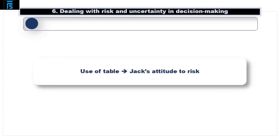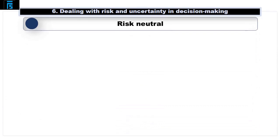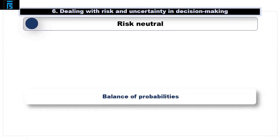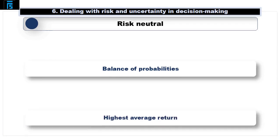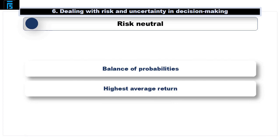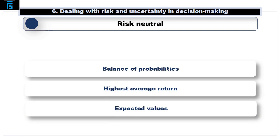How Jack uses this table will depend on his attitude to risk. Let's start off by assuming he is risk-neutral. This means he makes his choices based on the balance of probabilities. He'll choose the option which, on average, will earn him the highest return. In other words, he will make his choice based on expected values.